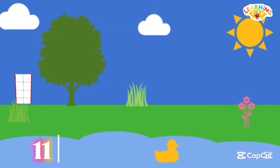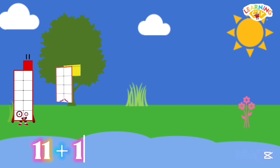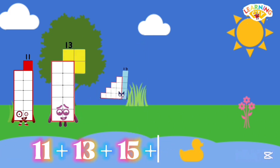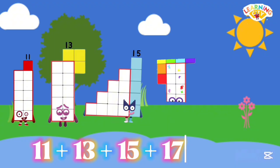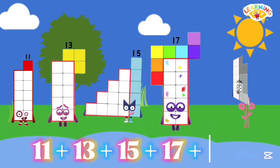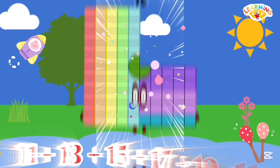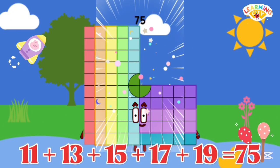11 plus 13 plus 15 plus 17 plus 19 equals 75.